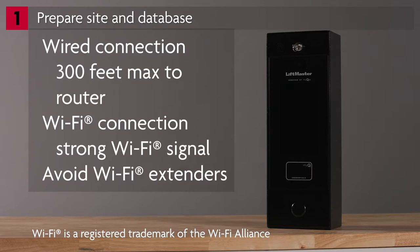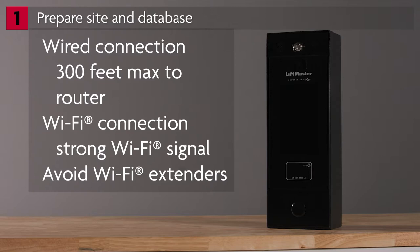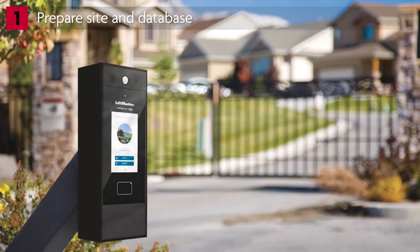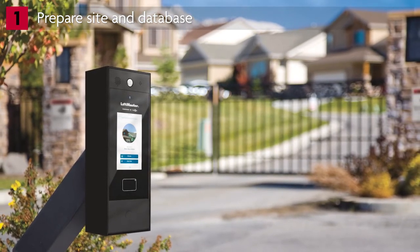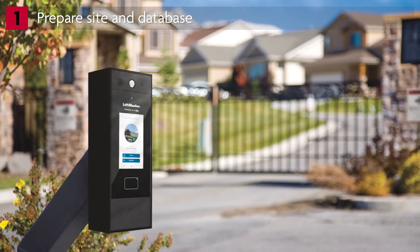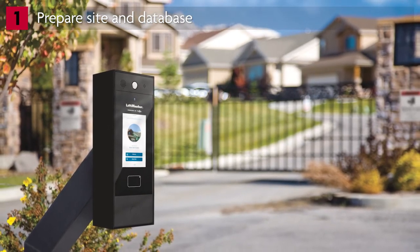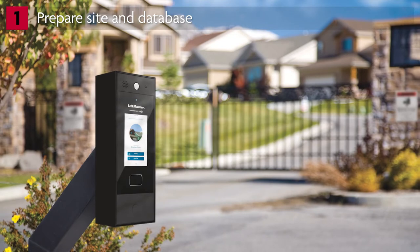Network proximity is another consideration. For ethernet connections, the controller location must be within 300 feet of the network switch or router. For Wi-Fi connections, the signal strength must be sufficiently strong. Wi-Fi extenders should be avoided because they introduce latency and can negatively affect video quality. As you walk through the job site, if the CAPXM will be used to control LiftMaster gate operators, make sure the physical location meets UL325 and ASTM F2200 requirements where these standards apply.